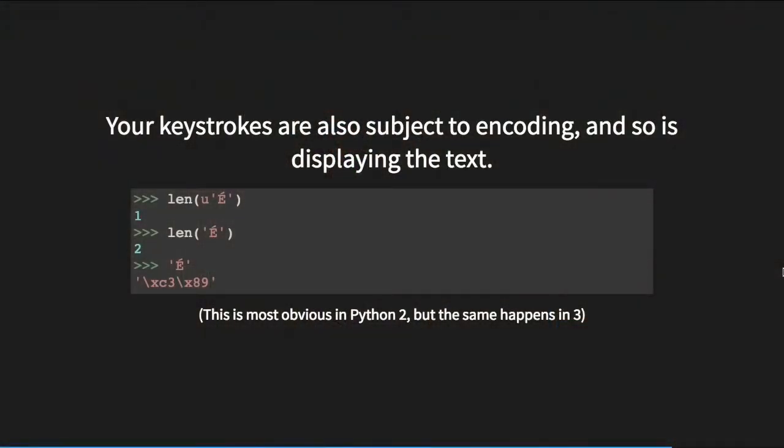Another gotcha is your keystrokes. Your terminal will show you an accented character because that's how it's programmed to show things, but Python might not read it that way. There's probably some dark magic at work for Python to read it as it is. Don't always trust what you see — you can use Python's repr functions to see what it's actually giving you. This is most obvious in Python 2 but also happens in Python 3 because that's just how terminals work.